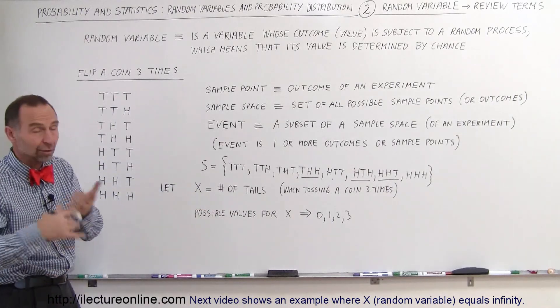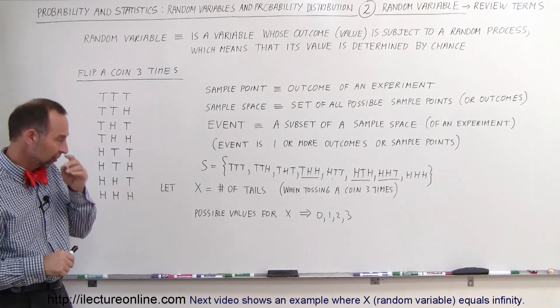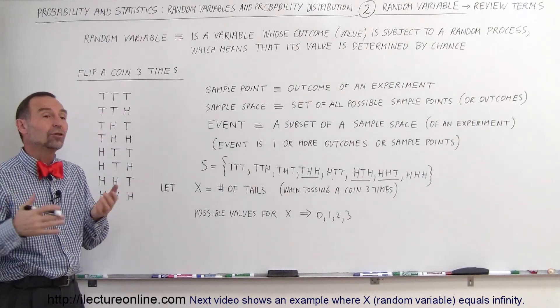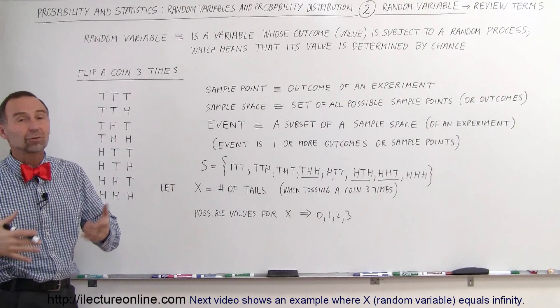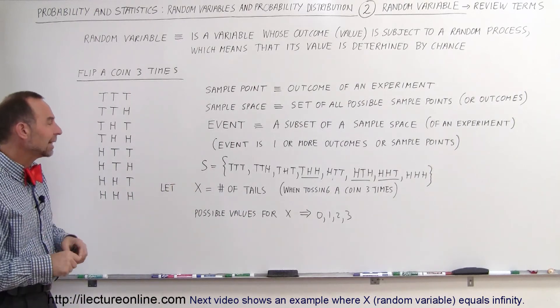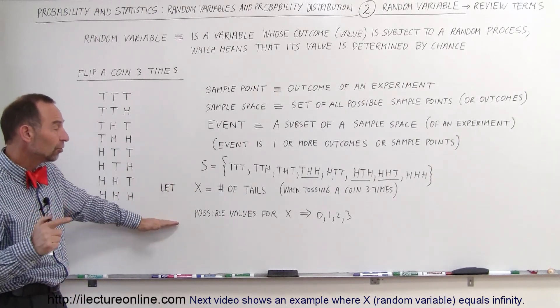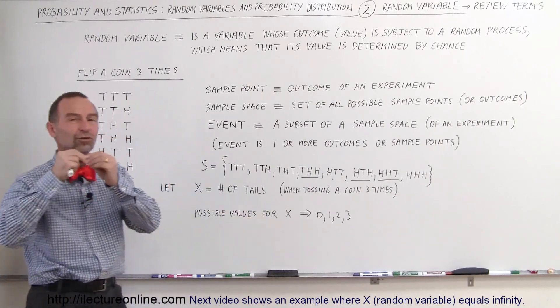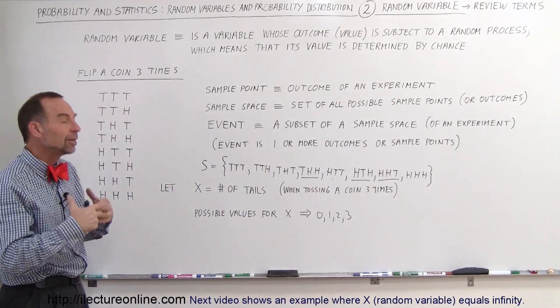We could define, let X be the number of heads or any other kind of things. So we could even define X as the number of tails minus the number of heads, whatever. You can make X just about anything you want. But again, notice that the possible values means that there's no one specific value for X. It could be a number of values.